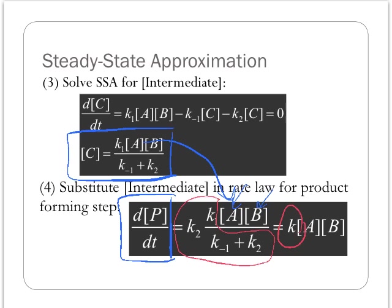So I have my product formation rate law, dP/dt, written in terms of concentration of reactants and a rate constant K. So I now have a rate law for a mechanism that did not have a rate determining step. I've done something pretty helpful here.